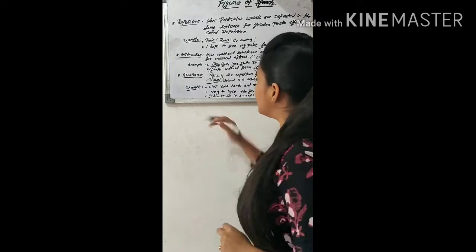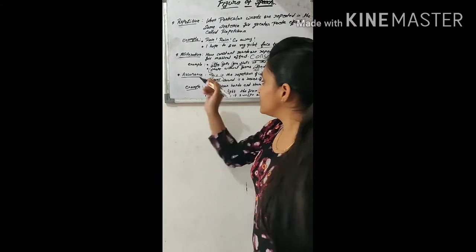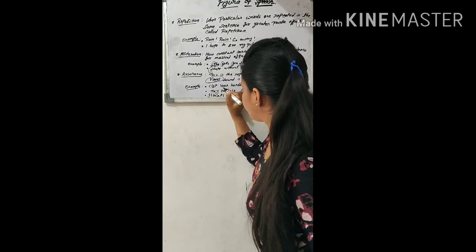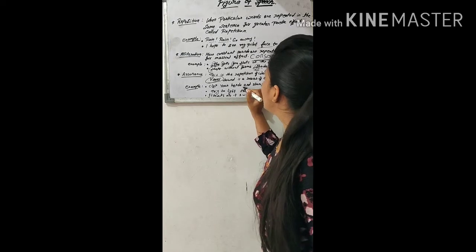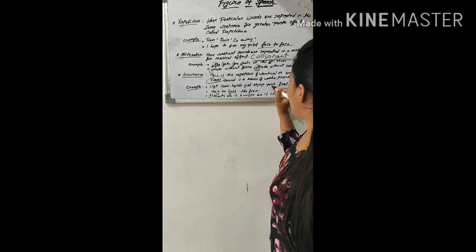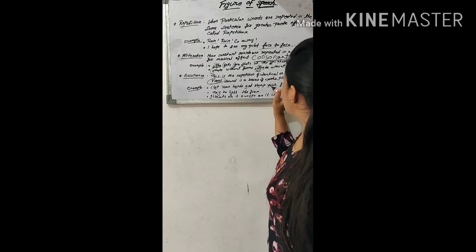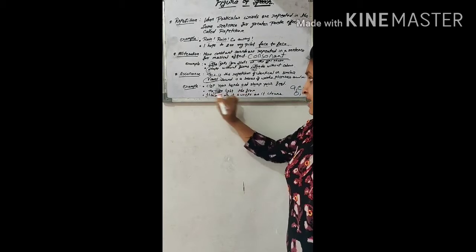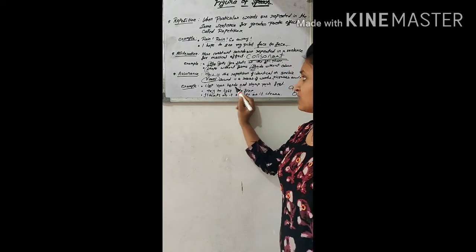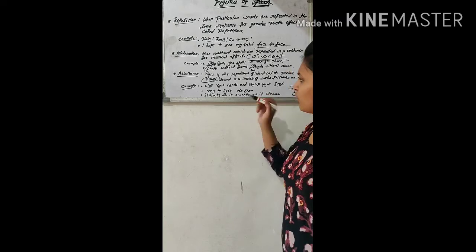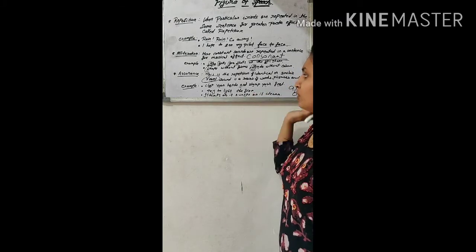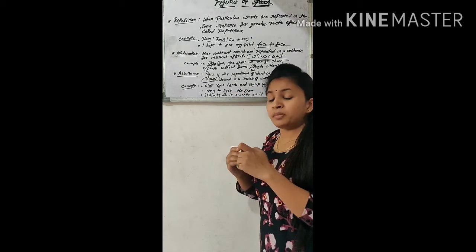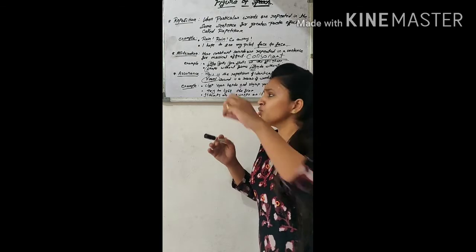For assonance, the vowel sound position within the word should be consistent. For example: 'Clap your hands and stamp your feet' — clap has 'a', hands has 'a', stamp has 'a', feet has 'e'. The vowel 'a' is common across these words, and if we look, it appears at the third position in each word.